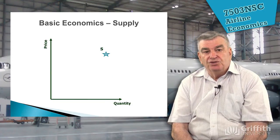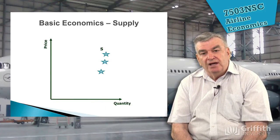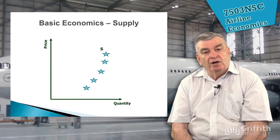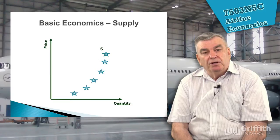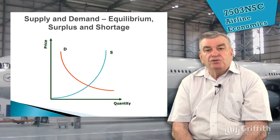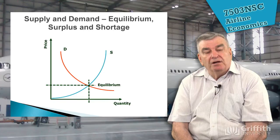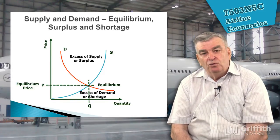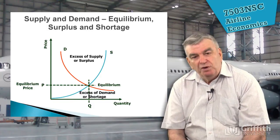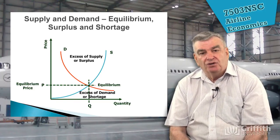We'll look at the supply side as well. As price goes down, airlines may say it's no longer viable to provide as many seats, so they might restrict their supply. We'll look at how supply and demand curves interact and tell us where we get an equilibrium price and quantity, and we can work out exactly when we have an excess of supply and when we have excessive demand. It looks complicated now but we build this up slowly.